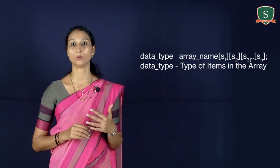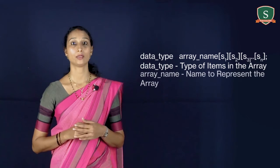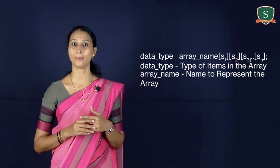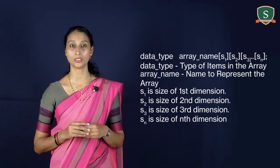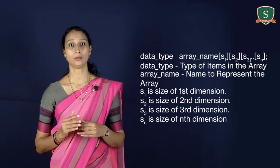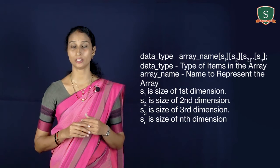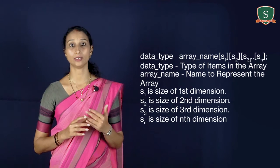Let's see how to declare a multidimensional array in C. A multidimensional array is declared using the syntax shown. Data type is the type of the items in the array — it can be int, float, character, etc. Array name is the name to represent the array. S1 is the size of the first dimension, S2 is the size of the second dimension, S3 is the size of the third dimension, and Sn is the size of the nth dimension.